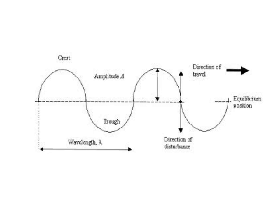With transverse waves there are certain things we need to be aware of. The wave travels across in one direction, but at the same time the wave itself goes up and down. The direction of the wave is at 90 degrees to the disturbance of the wave.